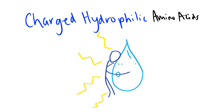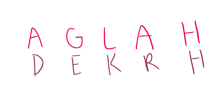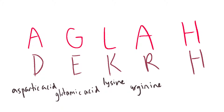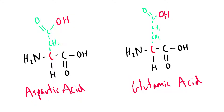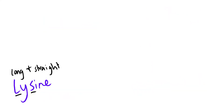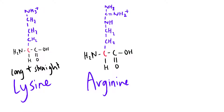Finally, we have reached the final category: charged hydrophilic amino acids. AGLA for the first letters, and DECRA for the abbreviations: Aspartic acid, Glutamic acid, Lysine, Arginine, and Histidine. Aspartic acid and glutamic acid are just asparagine and glutamine respectively, except they replace the NH2 with an OH to make it a carboxyl group, which is acidic. Being acidic, these give off hydrogen ions and become negatively charged. Lysine is long and straight because of the L and S, and looks like this. Arginine looks like this, and histidine looks like this.